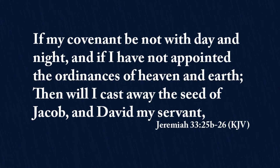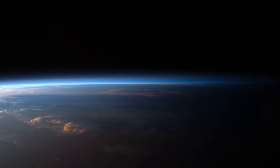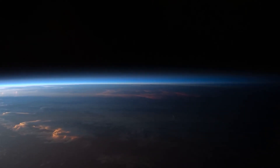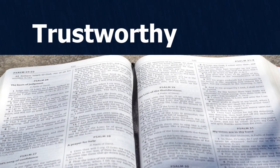Jeremiah 33:25-26 tells us, 'If my covenant be not with day and night, and if I have not appointed the ordinances of heaven and earth' — another version calls those ordinances 'fixed laws,' which would include those consistencies like addition, subtraction, multiplication, and division — 'then will I cast away the seed of Jacob and David my servant.' So God was saying to his people, look, I'm a consistent, covenant-keeping God. You can see that in what I'm holding together all around you, and I will be just as faithful to my covenant with you. You can rely on what God says. That's math's message.